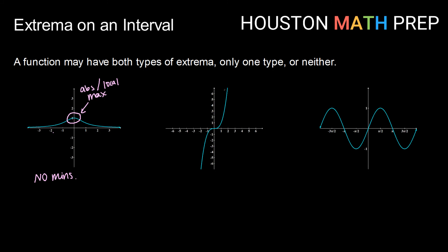Here's our cube function taken over the entire real number line. Since the right-hand side increases without bound, we do not have an absolute max. Since the left-hand side decreases without bound, we do not have an absolute minimum. And when we look, we don't have any hilltops or valley bottoms, so here we have no extrema of any kind — no minimums and no maximums.